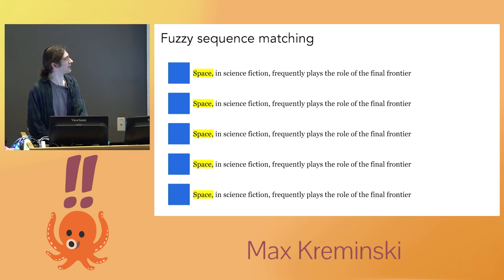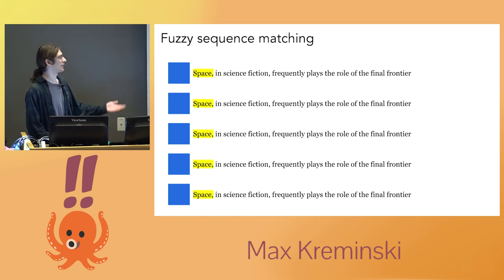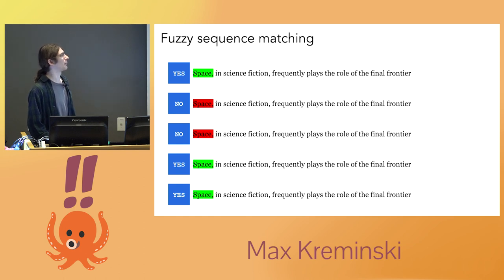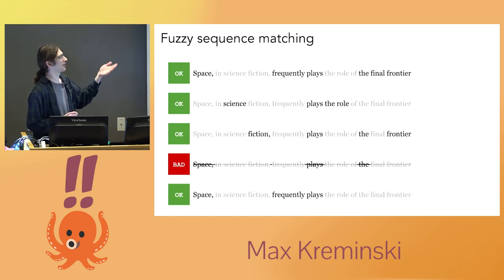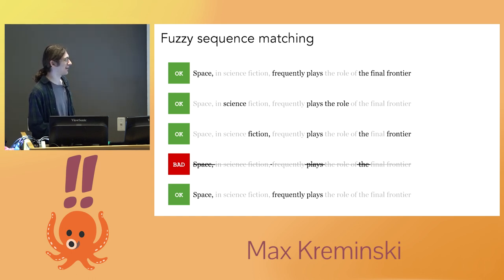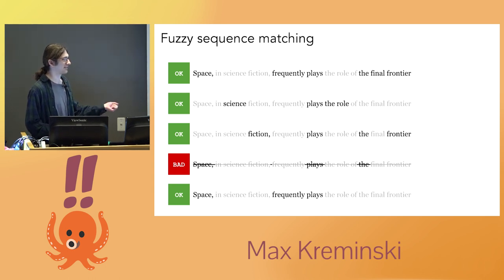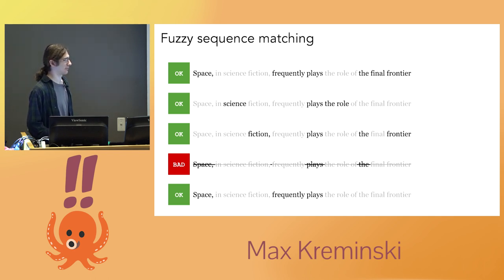What we do is go to each matcher and say: here's the first word — do you want to match this word? It's a noun, "space," so all of them could say yes. Randomly, two of them flip a coin and say no, but the rest say yes and keep that word. Then we move on to the next word and repeat, over and over until we're at the end of the text. We get five distinct readings: "Space frequently plays the final frontier." "Science plays the role." "Fiction plays the frontier." Or "Space frequently plays." All of which are interesting. A fourth one failed to match anything useful — it got "space," it got "plays," then hit the end of the text and can't match anything more, so that's a bad output you just throw out.